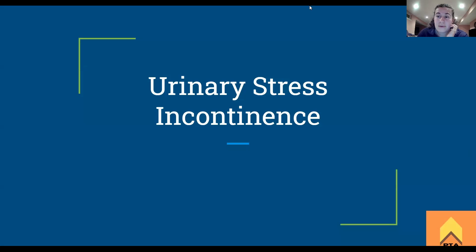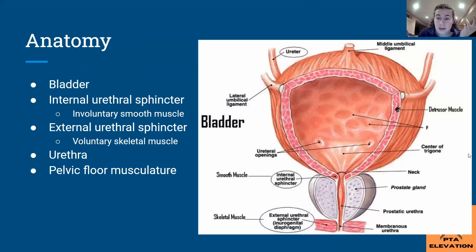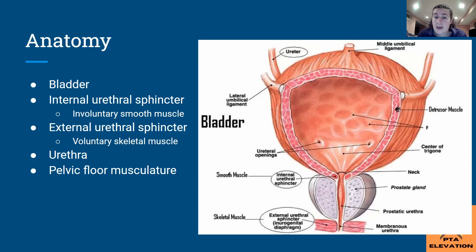The anatomy associated with this condition — the bladder is the big one. We have the external urethral sphincter and the internal urethral sphincter. The internal one is involuntary smooth muscle, same kind of smooth muscle as the rest of the bladder. The bladder has the detrusor muscle, which is smooth muscle. The internal urethral sphincter is smooth muscle, so therefore it is involuntary — your body cannot control when it opens or closes.